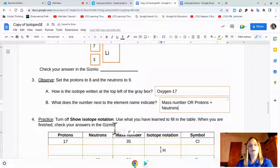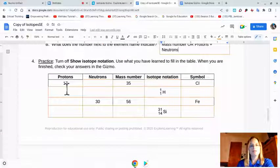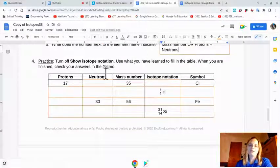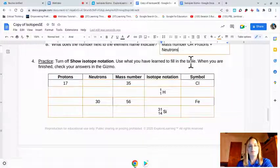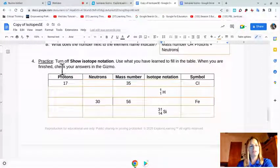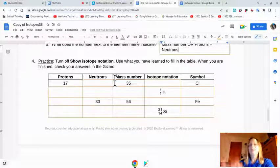So we're going to practice. Turn off show isotopic notation. Let's not. Use what you have learned to fill in the table. When you are finished, check your answers in Gizmo. Perfect.